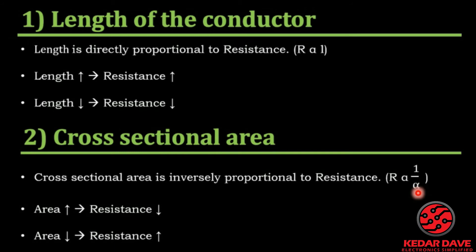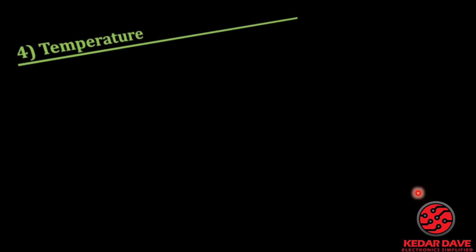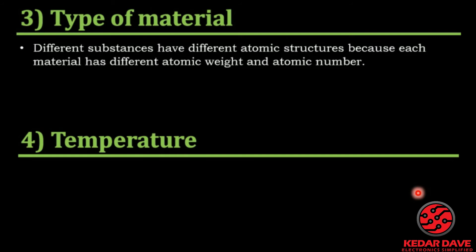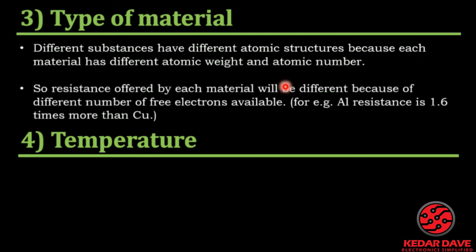The third dependency is the type of material being used. Different substances have different atomic structures, which means different valence electrons, different atomic weights, and different atomic numbers. For example, aluminum has 1.6 times more resistance than copper. So resistance depends completely on the type of material.